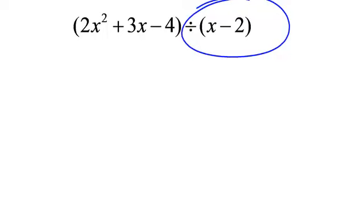So what special number do I put in my little box? Well, x minus 2, if it is equal to 0, then x must be 2.